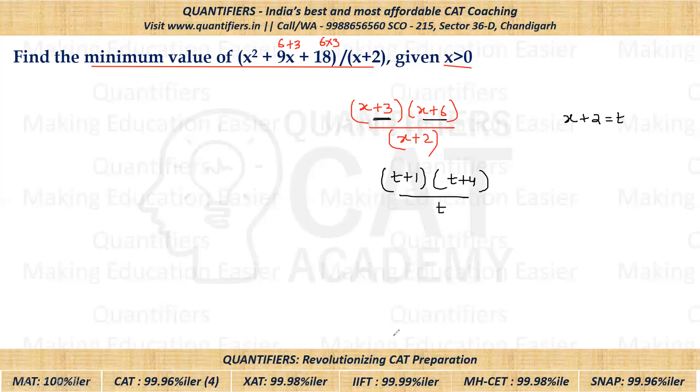And one very important thing to notice here is that students, x is positive, and if x is positive, T ki value—we assumed T as x+2—so definitely T will also be positive. x is already positive, and if we add 2, then the value will also be positive. So T is also positive here.